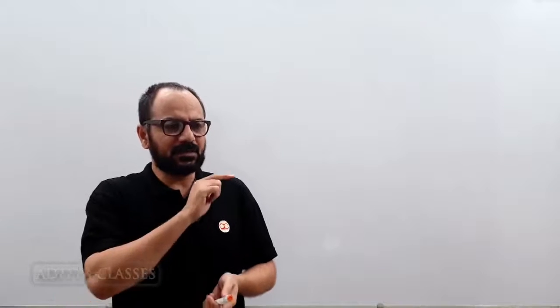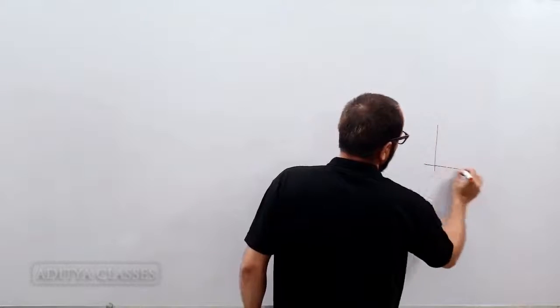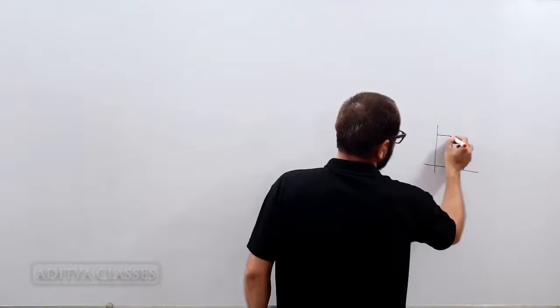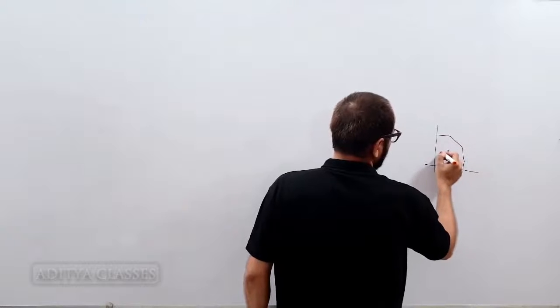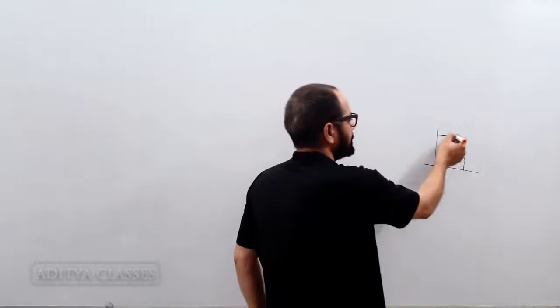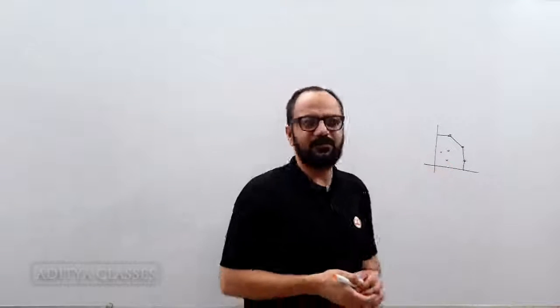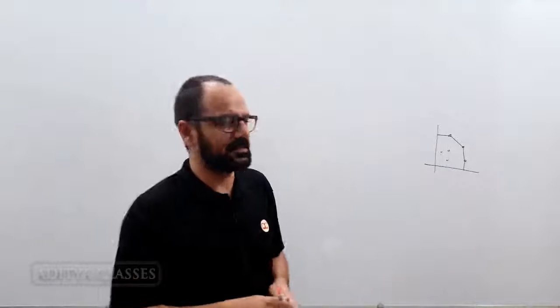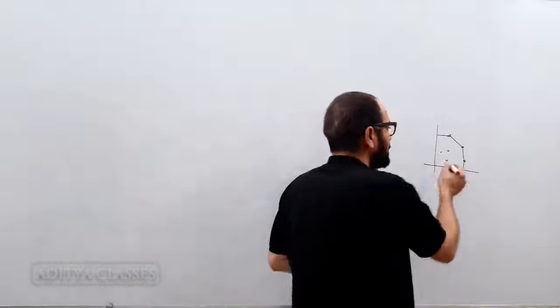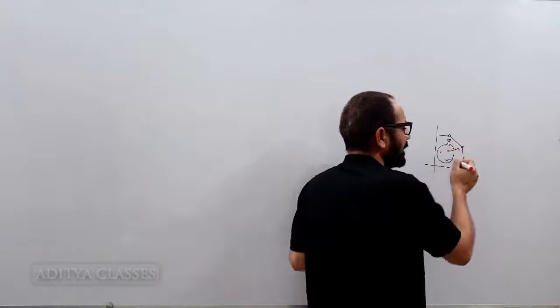Once we know that we have an efficiency frontier, this is my efficiency frontier and these are my inefficient units. The efficiency frontier has the efficient units and remaining are inefficient units. Once I know this, now is the time to advance further to make these inefficient units efficient.